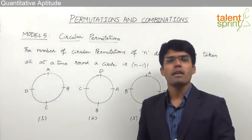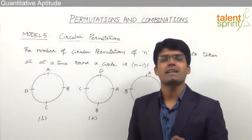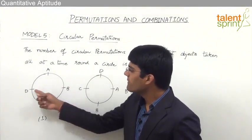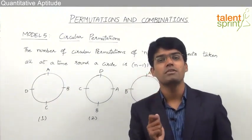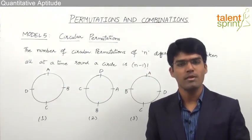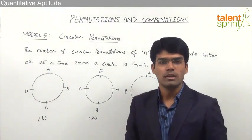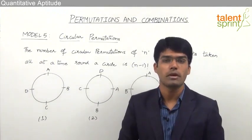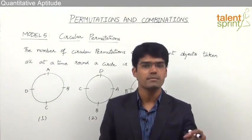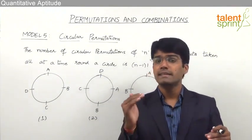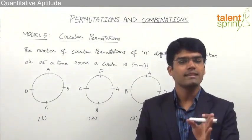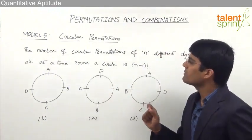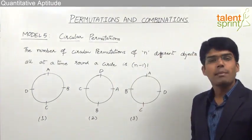The reason is that for a circle there is no definite starting point or ending point. If you look at a circle with four positions, we cannot decide which is the first, second, or last position because a circle is a closed loop. But in a linear arrangement there is a definite first position and then definite second, third, and last positions. Due to this, circular permutations are taken as (n-1) factorial.